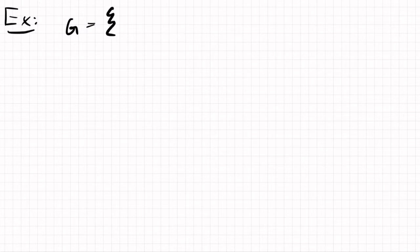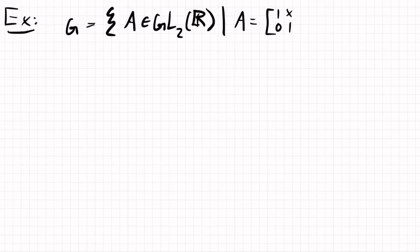G is the subset of matrices A in GL2R, such that A is of the form 1, 0, 1, and then I'll put a star here to denote that any number can go there. I could say 1, 0, 1, B, for some B in R.